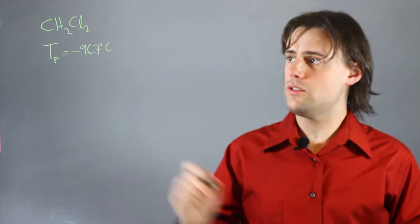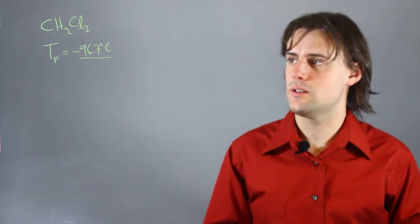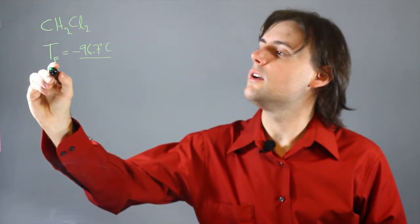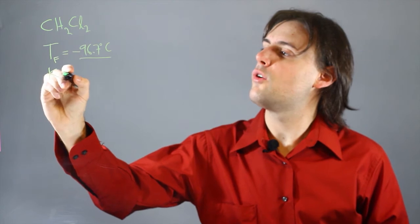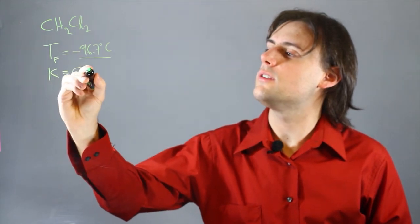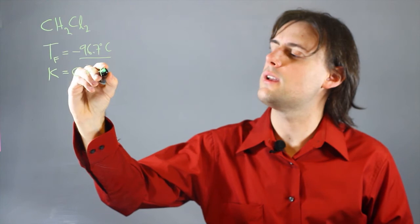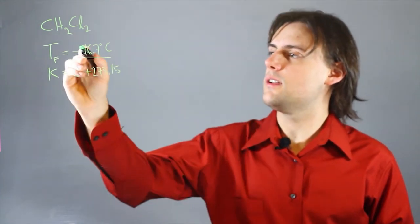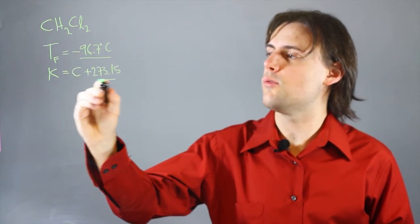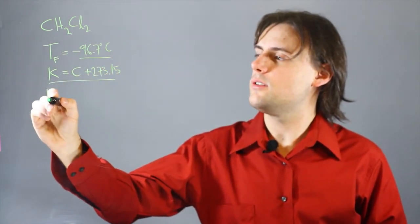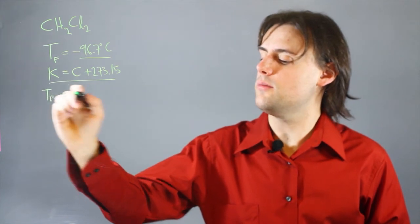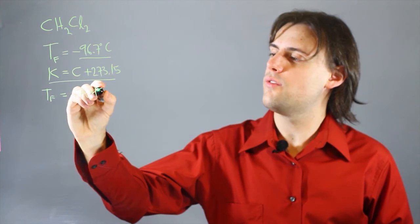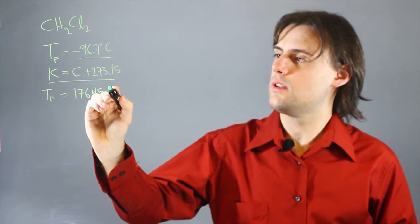If we wanted to re-express this temperature in units of Kelvin, then we would have to use the formula Kelvin is equal to Celsius plus 273.15. When we stick in this temperature into this equation, we get out T freezing in units of Kelvin is equal to 176.45 Kelvin.